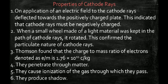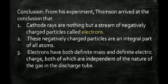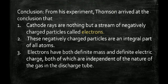Cathode rays are nothing but electrons moving along that path — that is how electrons were discovered. Thomson concluded that cathode rays carry electrons, and these negatively charged particles are an integral part of the atom. Electrons have both a definite mass and a definite electric charge, and carry a negative charge.